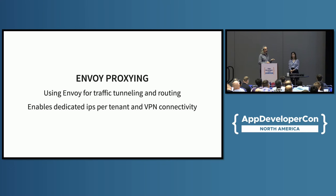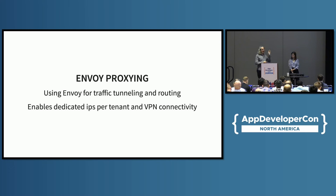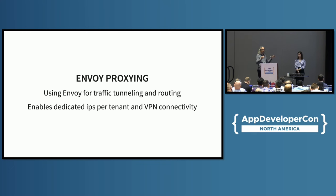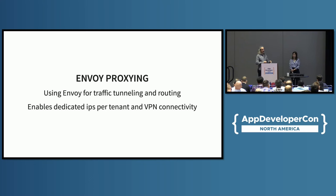Envoy is a very popular cloud-native proxy. We use it for traffic tunneling and routing. In our use case, this allows us to have dedicated IPs per tenant and VPN connectivity from each customer pod to each customer endpoint — giving them a specific IP without separate hardware. We set up a sidecar, configure the Java JVM to send traffic to that sidecar, and that sidecar sends it to another Envoy outside the Kubernetes cluster, routing out to the internal customer network.